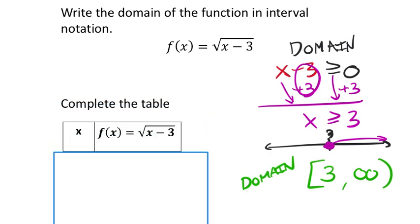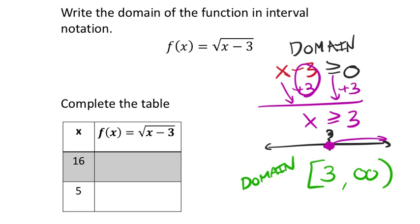Now that we have that, let's go to the table. So if this is saying f of 16, by the way, so instead of it being the square root of x minus 3 there, we now say the x is 16.